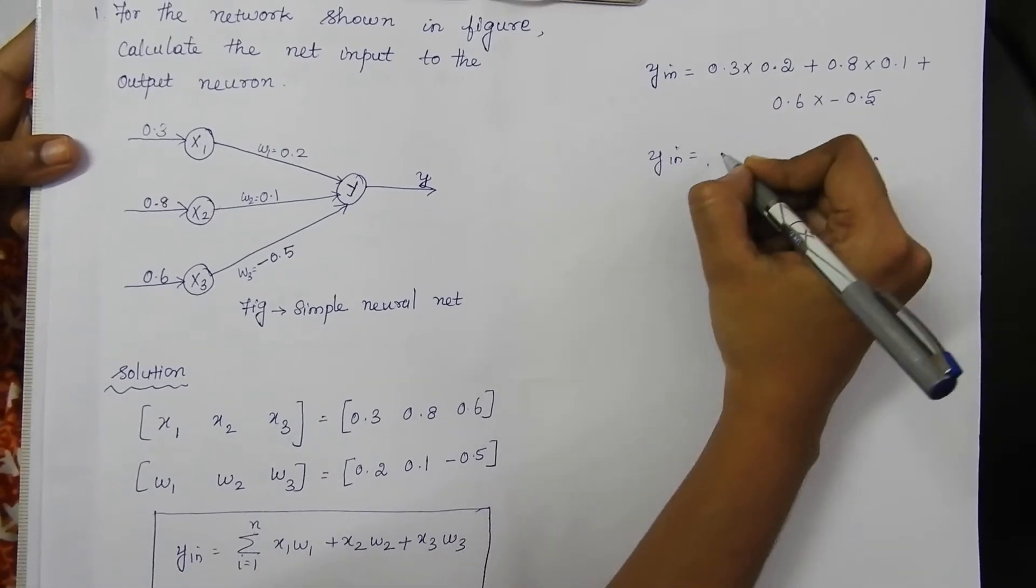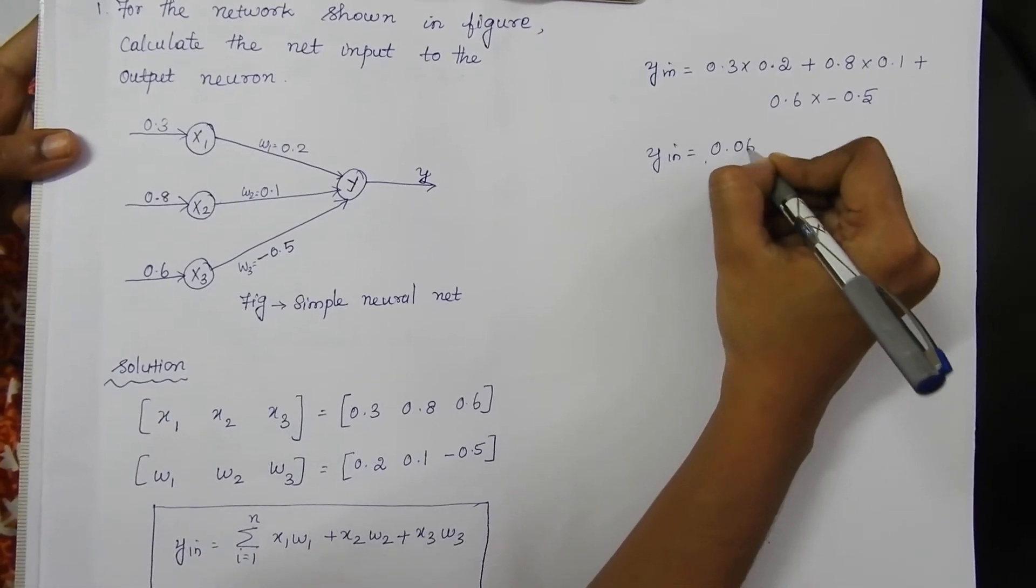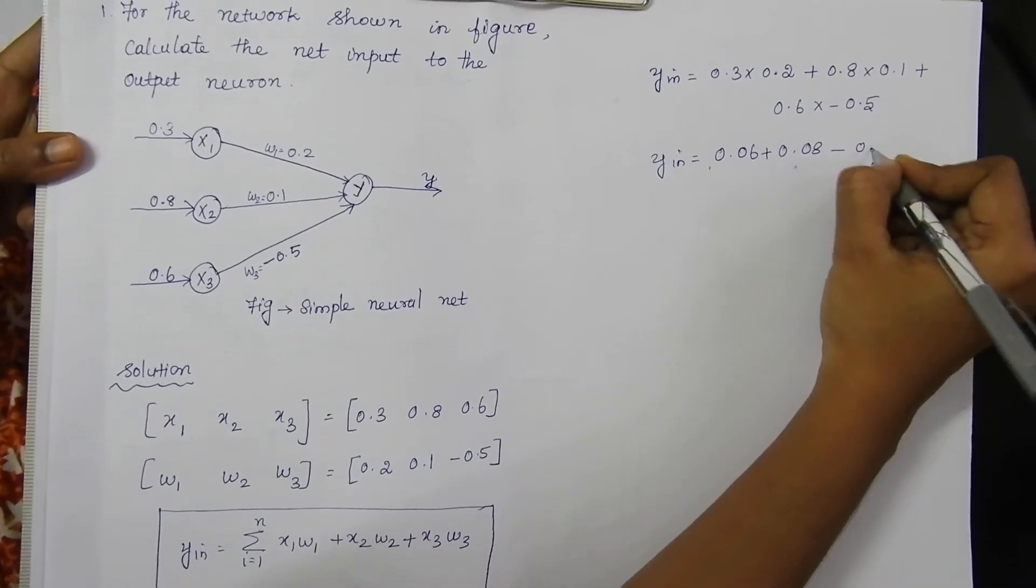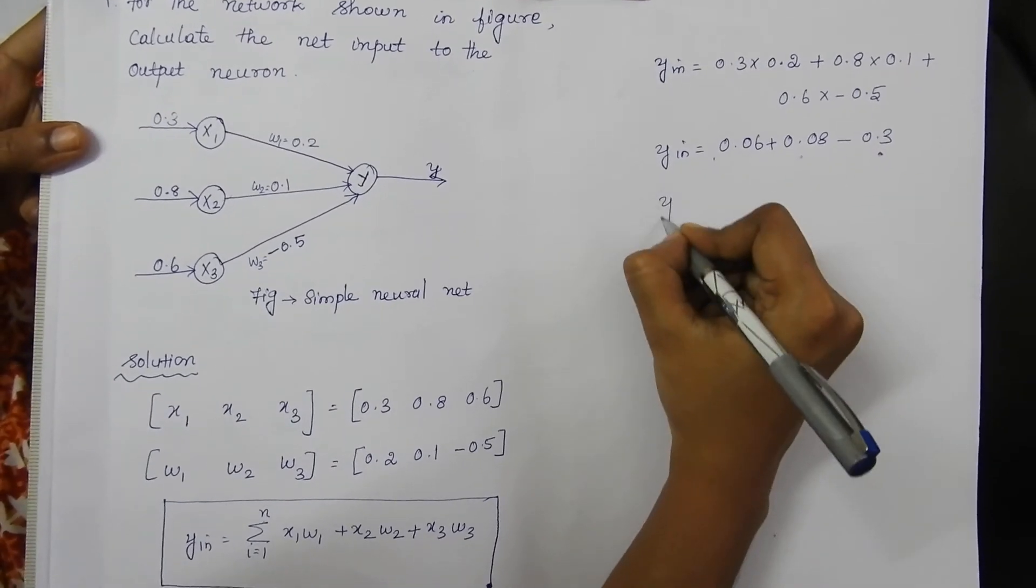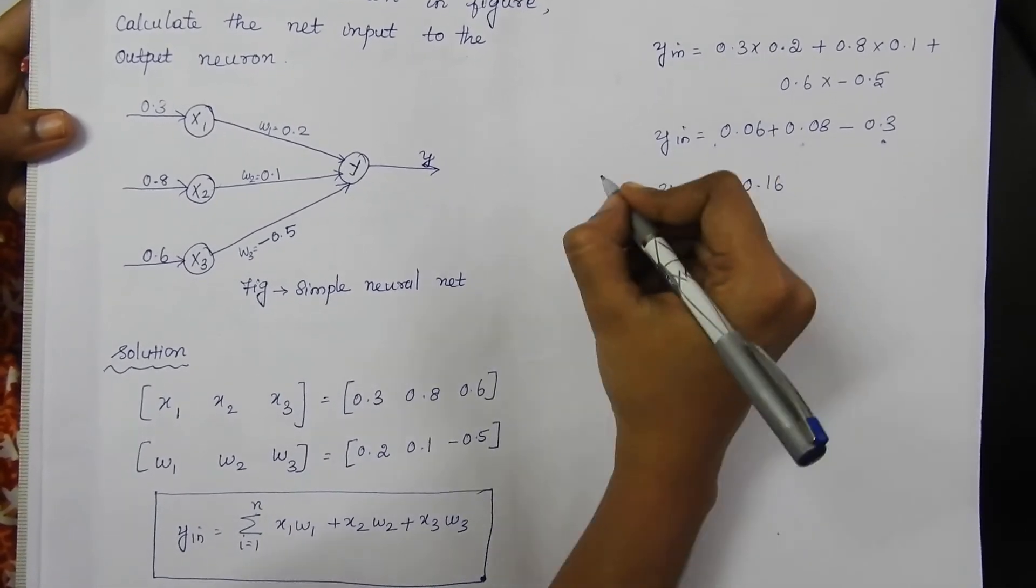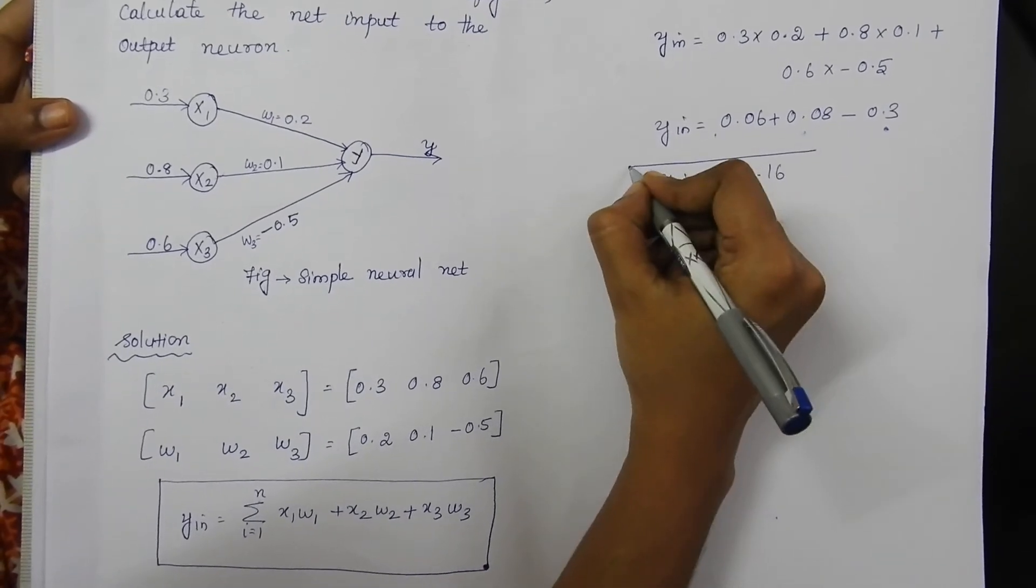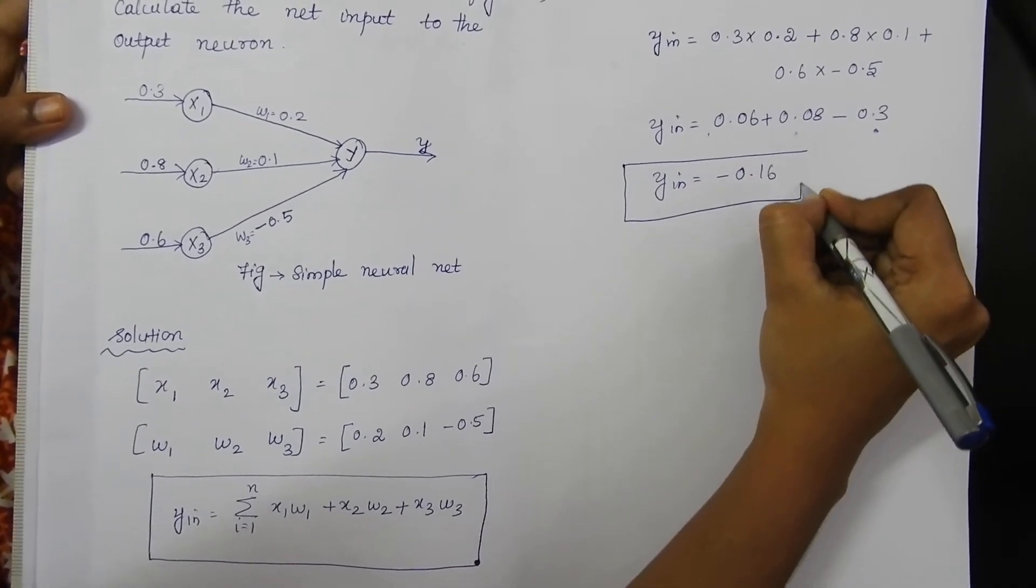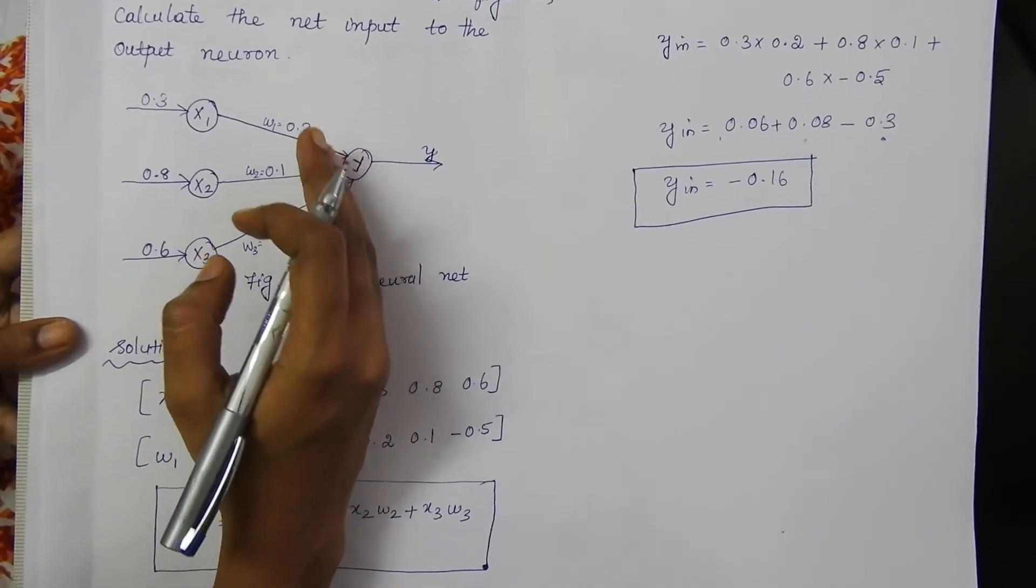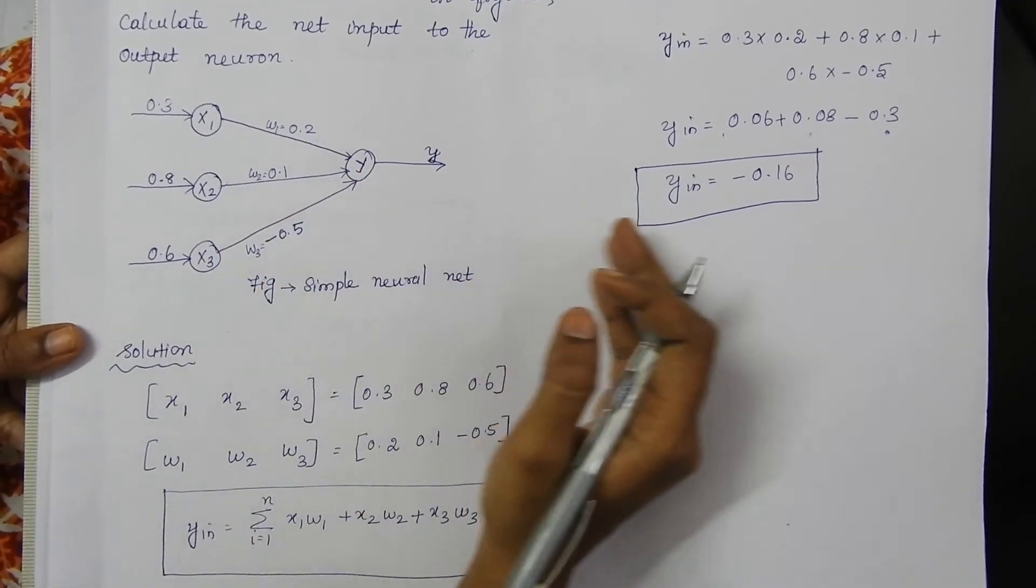After calculation, we get the value 0.06 plus 0.08 minus 0.3, giving y_in equals -0.16. Activation functions are applied over this net input to produce the output.